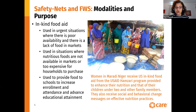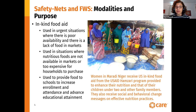This picture shows women in Niger, in Marathi, receiving U.S. in-kind food aid from the USAID Hamzari Program that is run by Care New Share. The food aid is provided to enhance their nutrition and that of their children under two and other family members who may be in need. They also receive social and behavioral change messages on effective nutrition practices. These women would not normally be able to purchase highly nutritious foods such as the CSB that they're now receiving, due to their poverty.